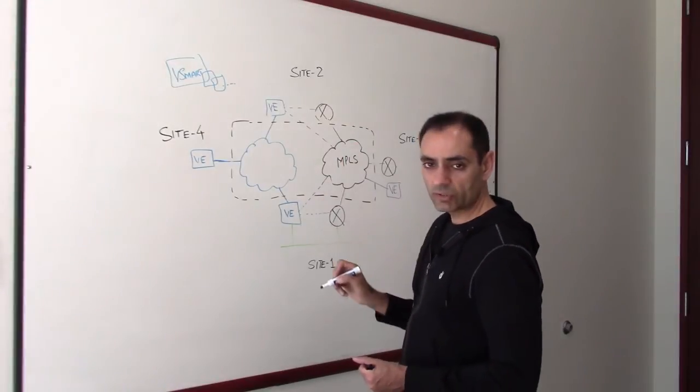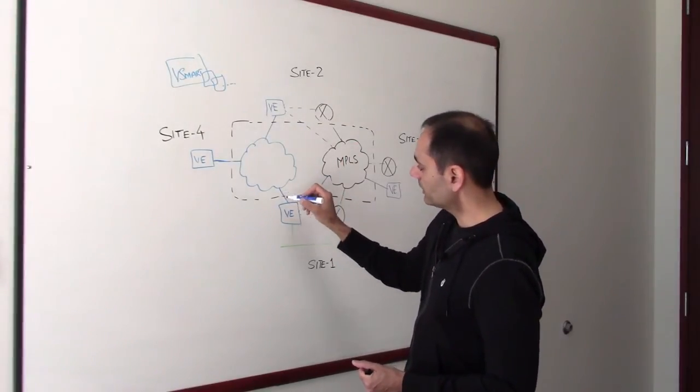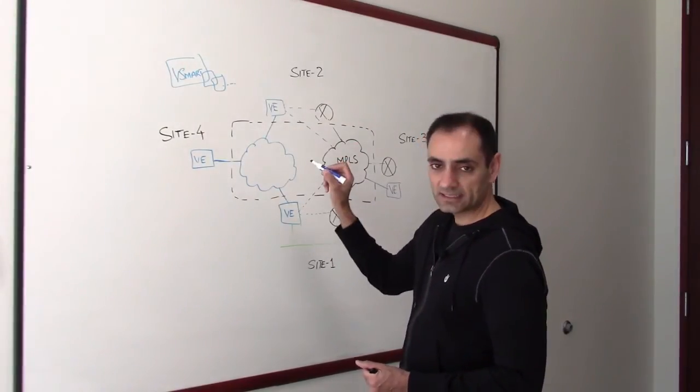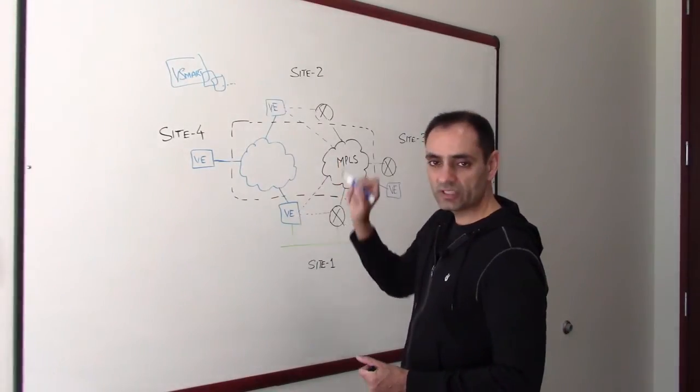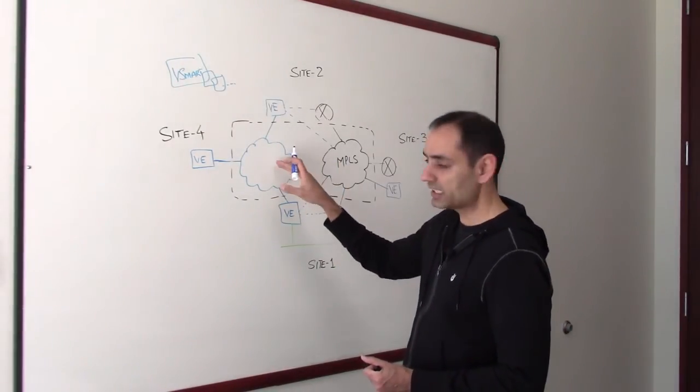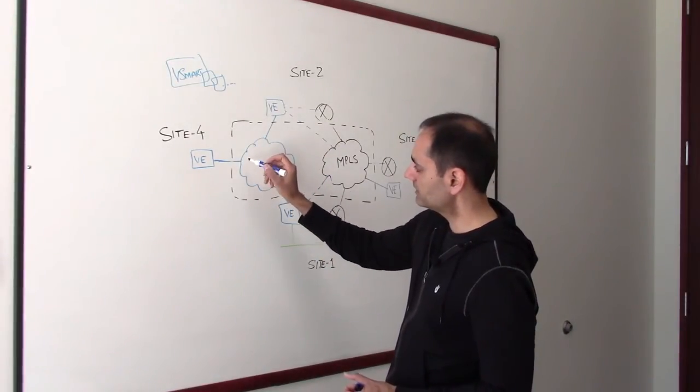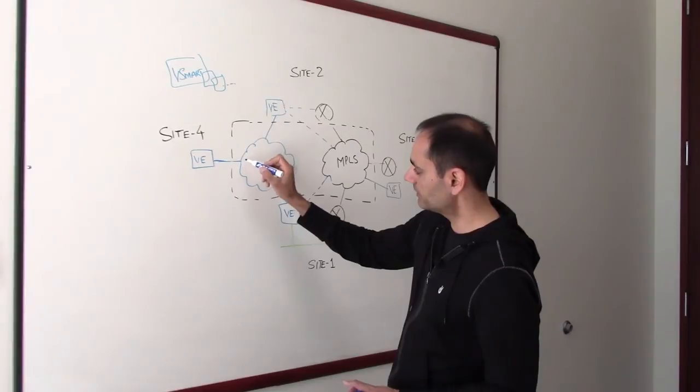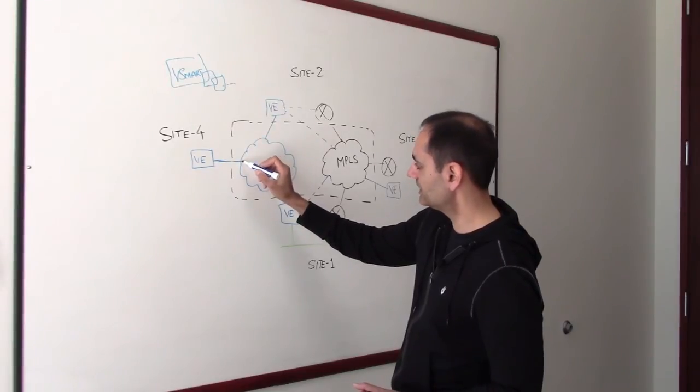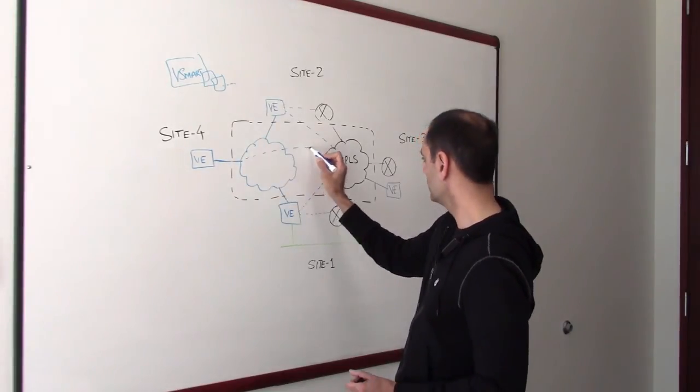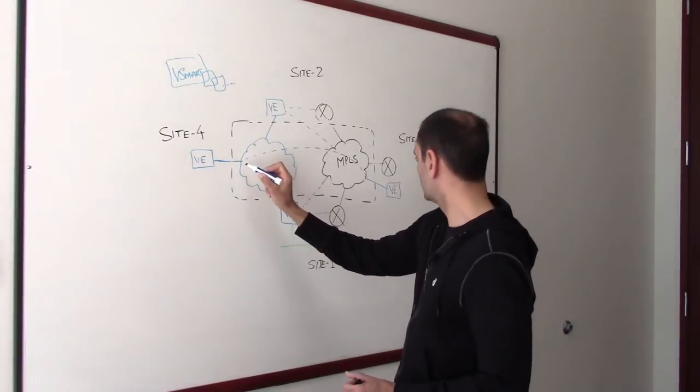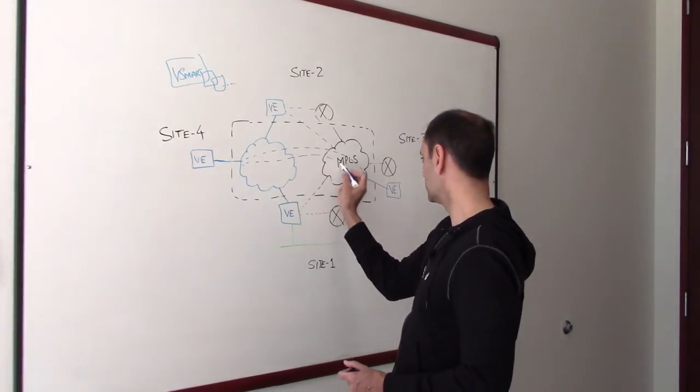So in case of a single overlay, you can have direct data plane between any of these V-Edge provided that your transport allows it. You can have a direct data plane or direct secure data plane from site 4 all the way to this site which is site 3.